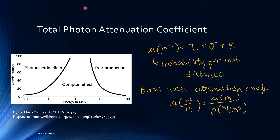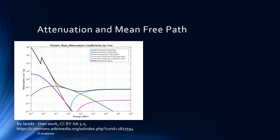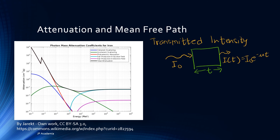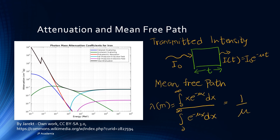The figure on the left shows the mass attenuation coefficient for iron. It shows the attenuation as a function of energy per type of interaction, with the black curve showing the total mass attenuation coefficient. This drawing shows the expression for the intensity of the transmitted beam, which decreases exponentially with the material thickness T — we have the initial intensity and the final intensity described by this equation. Last, we can define the average distance between two successive interactions, called the mean free path lambda, which equals one over mu, the inverse of the total linear attenuation coefficient.